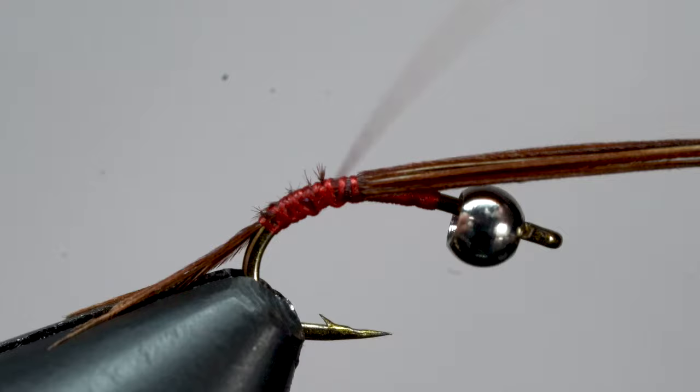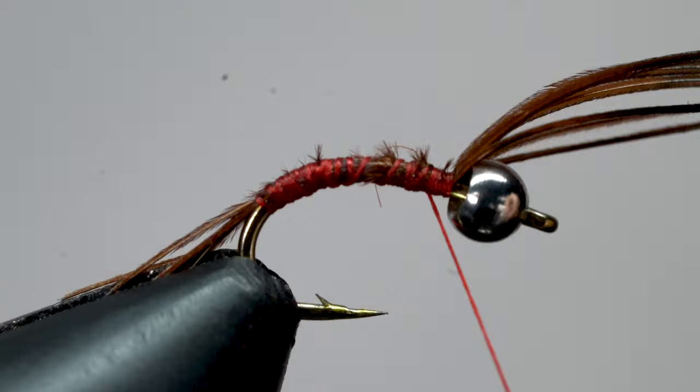And for this fly, I like to keep the tail a little bit smaller than say your standard mayfly nymph, maybe about half a hook shank in length. Now we're going to wrap all the way back up the hook, locking this pheasant tail into place. Then we'll grab our scissors and snip the excess free.